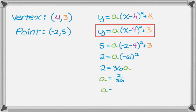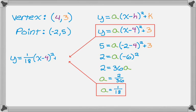And a is 1 over 18, so I put a box around that to also help you focus. I'm going to combine these two things now. So I'm going to take the thing in the first box, and I'm going to substitute for a. So my final answer is, y is 1/18th, the quantity x minus 4 squared plus 3. And that's the equation of the quadratic having that vertex and passing through that point.